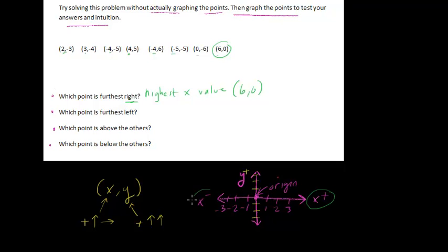Furthest left would then have the most negative x value. And if we look through here, negative 5 is that point. So here's the lowest x value, and that would just be (-5, -5).